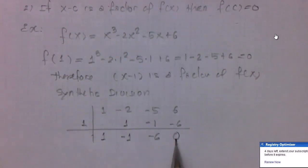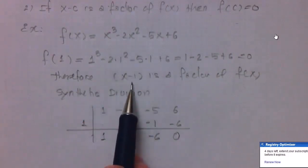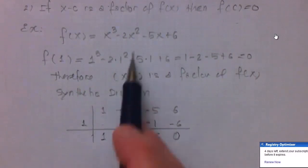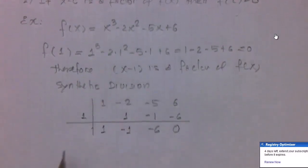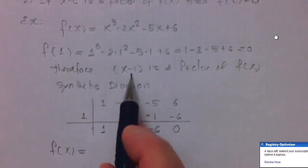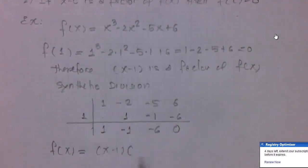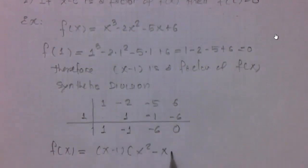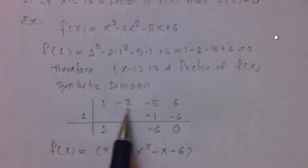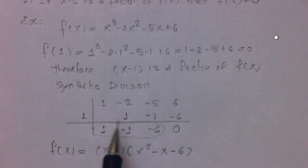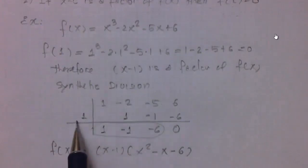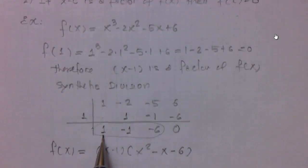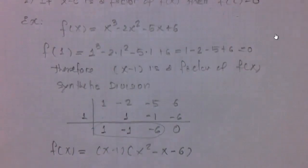When I get a remainder of zero, that means this polynomial is divisible by x minus one, so x minus one is a factor. That means I can write f(x) as x minus one times x squared minus x minus six. Notice: this was a third-degree polynomial, so the coefficients I get here correspond to a second-degree polynomial — the result of dividing a third-degree by a first-degree polynomial.